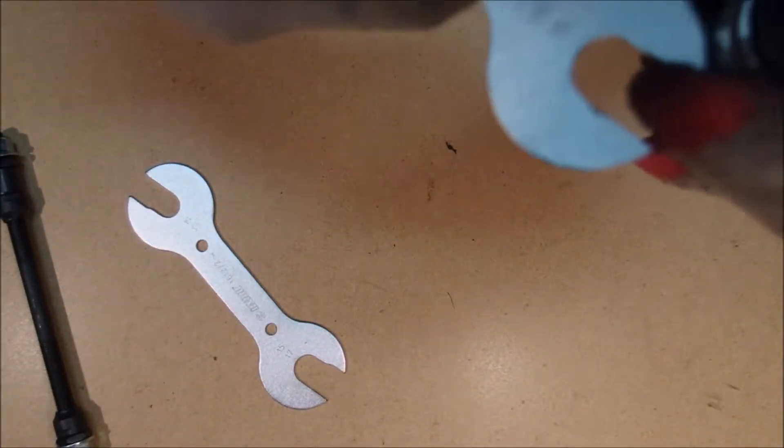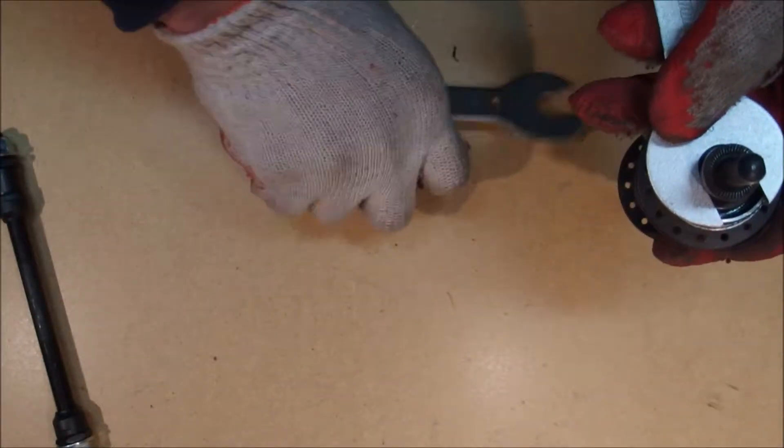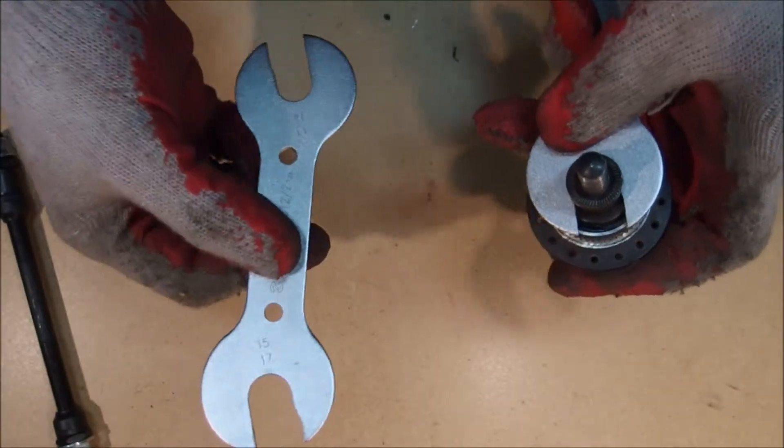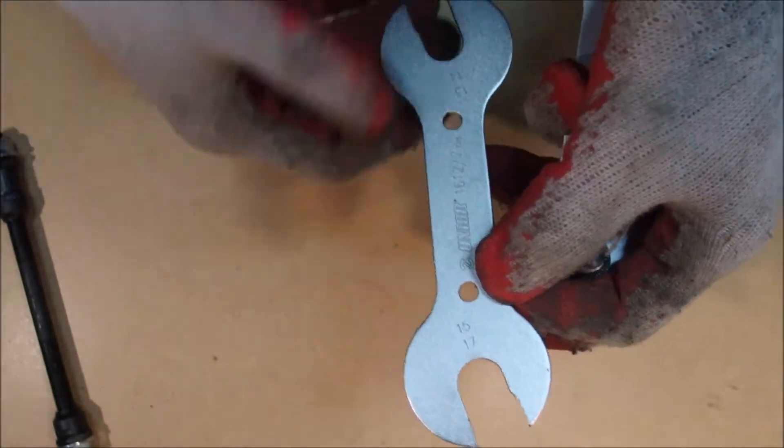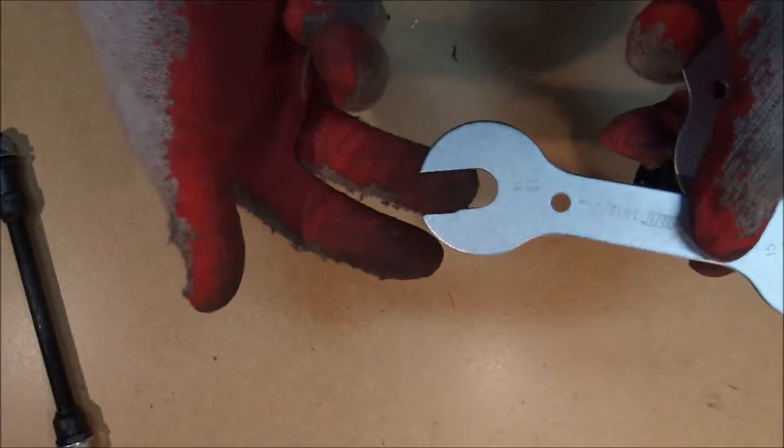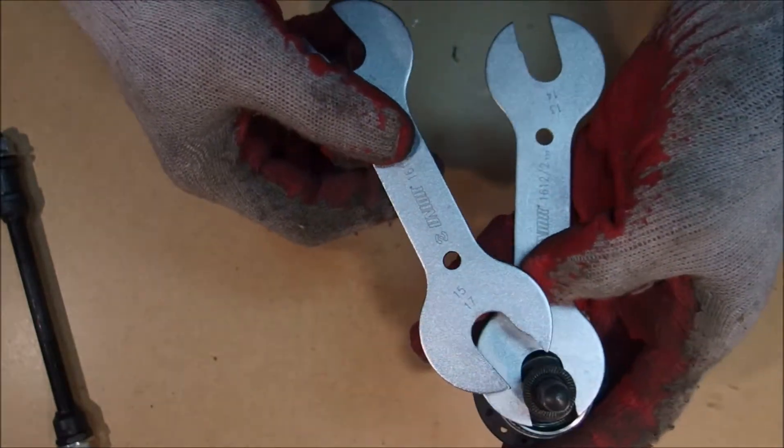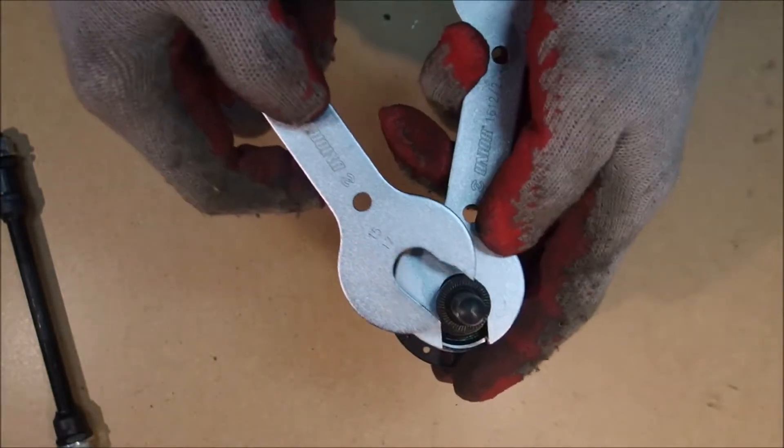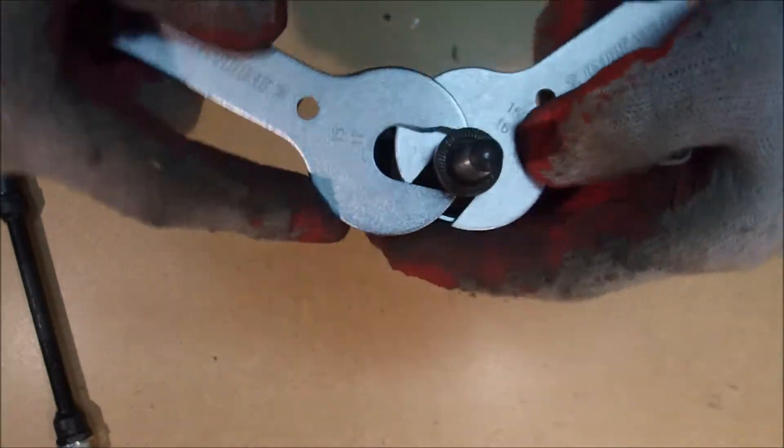You will quickly notice that these specialized wrenches for cup and cone servicing usually come with several sizes. This one is 15 and 17 millimeter, and on the other side is 13 and 14, and that's because this is for the front hub. This is for the rear hub, and these two wrenches are fairly universal. But there are other sizes out there, and essentially doing this is rather annoying. So let's disassemble this.